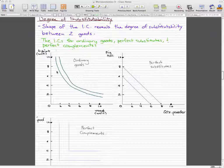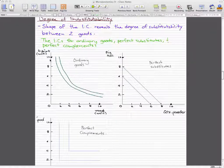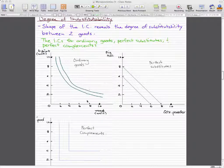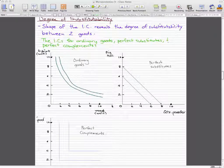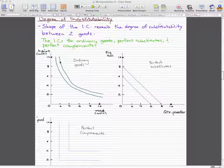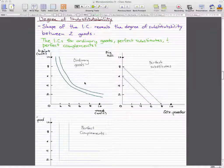For ordinary goods, we have a nice curved line. An example of this would be between two goods like t-shirts and wood that we've been talking about. We consider these as ordinary goods, so the degree of substitutability would give us a curved shape of the indifference curve.